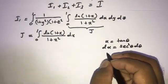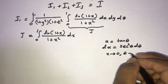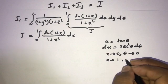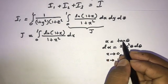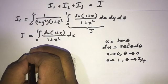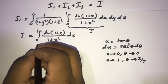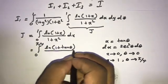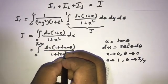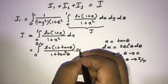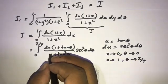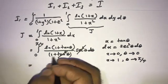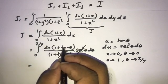Now we want to change the limits. When x approaches 0, θ approaches 0. And when x approaches 1, θ approaches tan⁻¹(1) = π/4. So now we can write from 0 to π/4, natural log of (1 + tan(θ)) over (1 + tan²(θ)) times sec²(θ) dθ. Now we know that 1 + tan²(θ) = sec²(θ), so this term gets cancelled, and now we have the integral from 0 to π/4 of natural log of (1 + tan(θ)) dθ.